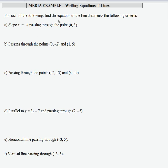Here we're asked to find the equation of the line that meets the given criteria. So let's take a look at each example. In the first example, we are provided with a slope and an ordered pair.